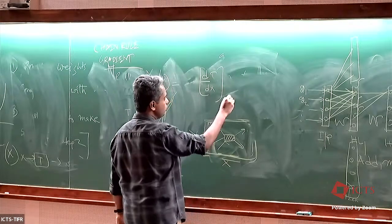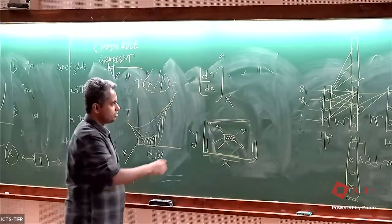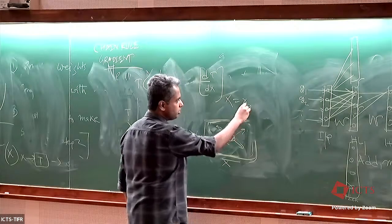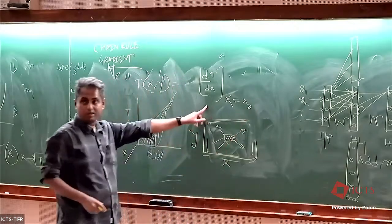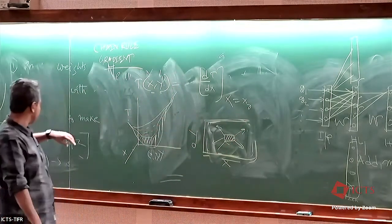Now our objective is to understand how gradient descent works with a couple of real examples. Let's say your function is J(theta) = theta^2. You are given the task of finding the minimum of it. If you draw this function, it would look like a parabola.